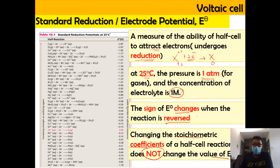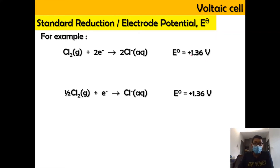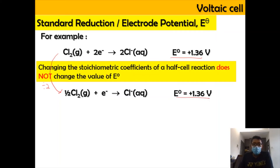For example, the standard reduction potential for Cl₂ + 2e⁻ → 2Cl⁻ is +1.36 V. If we divide the entire equation by two — ½Cl₂ + e⁻ → Cl⁻ — the E⁰ value remains +1.36 V. This confirms that changing the stoichiometric coefficient does not change E⁰.